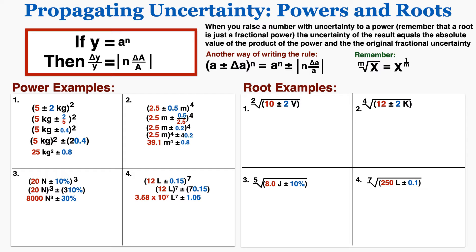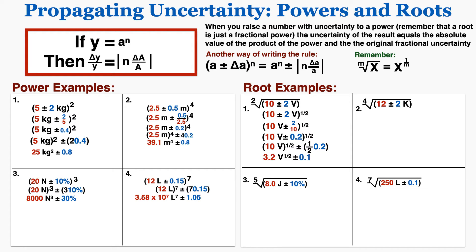Going on to the root examples — look at the top right and remember that x under a certain root is equal to x raised to the power of 1 over that root. So in the first problem, that square root or second root is the same as that number being raised to the power of 1 half. I can now just apply my normal power rule to this problem: I need the uncertainty as a fractional uncertainty, then I multiply that by the power, and this is the result I get for my uncertainty and for the original number.